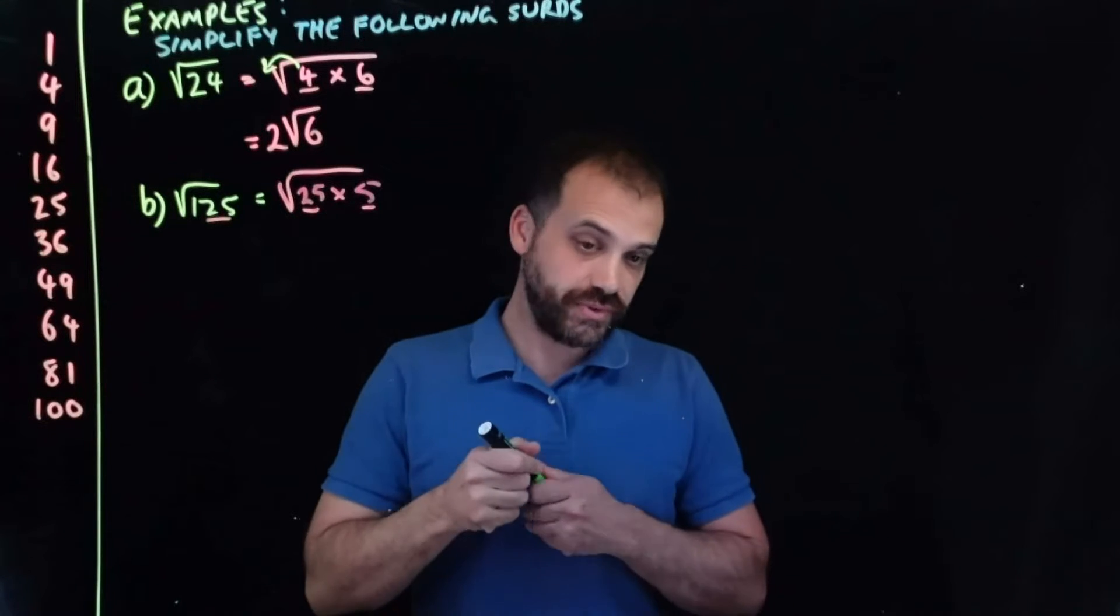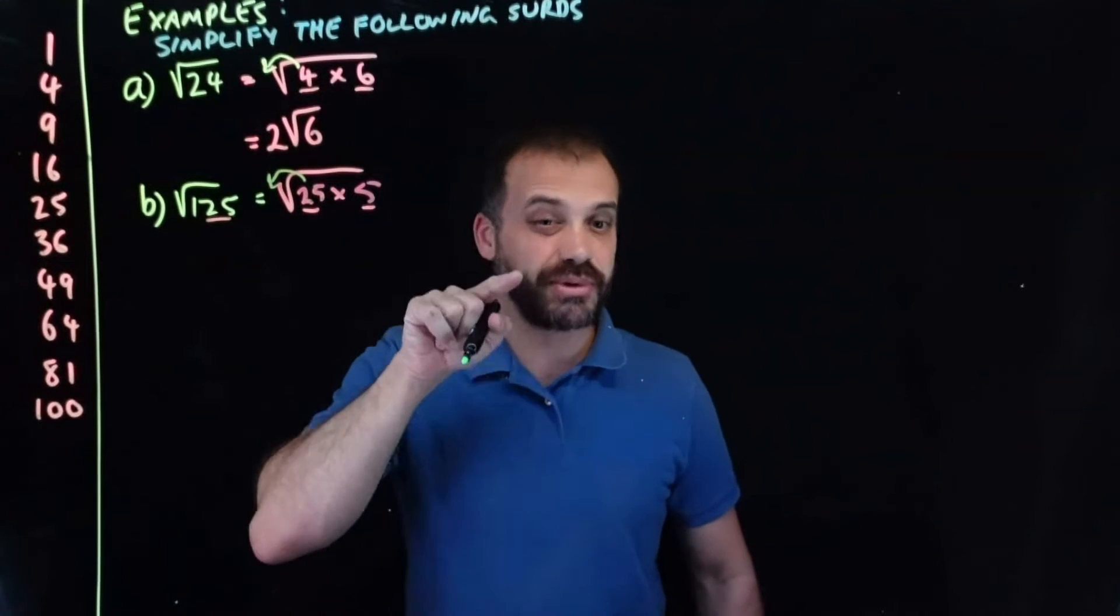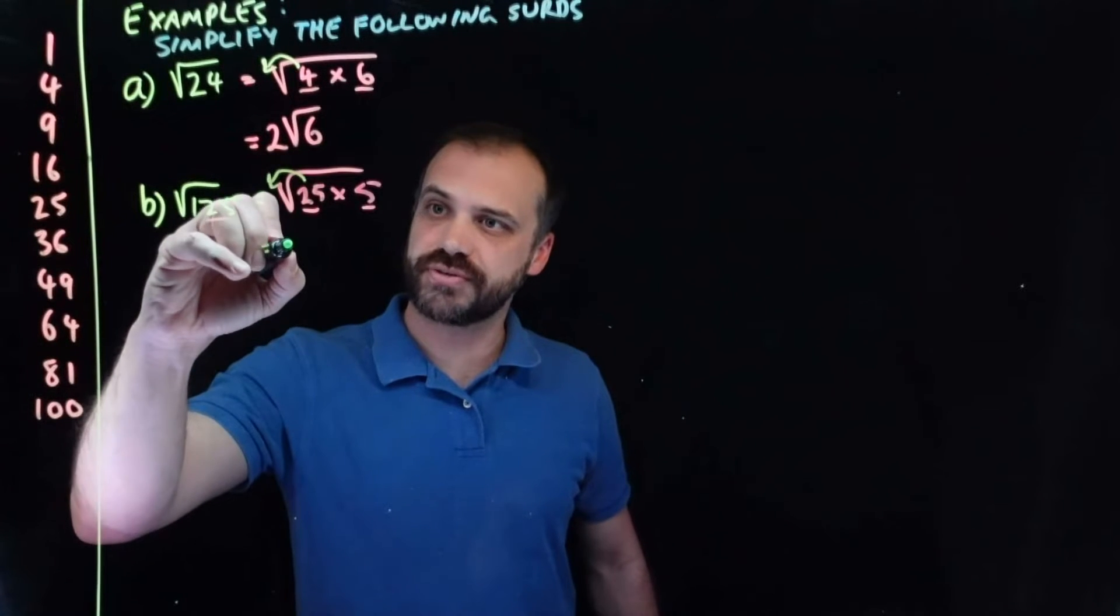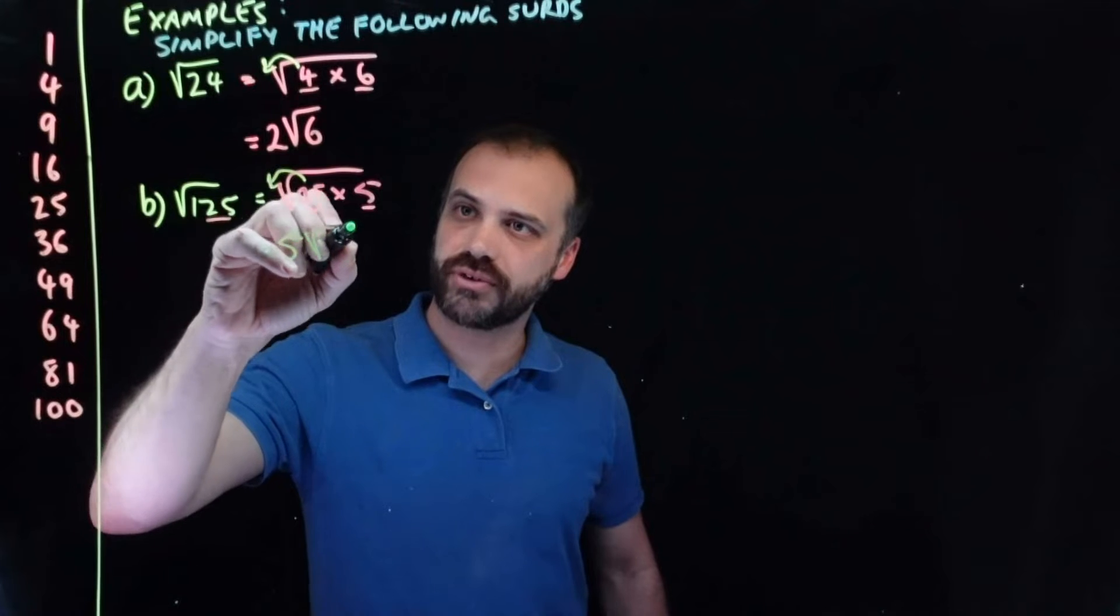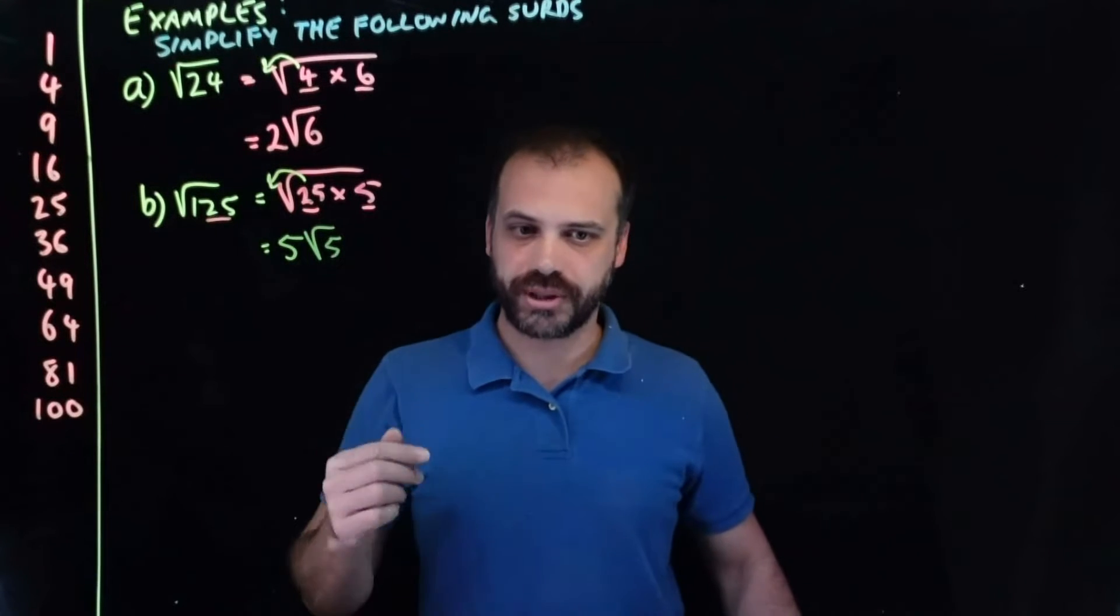And now that we've done that, we bring the 25 out of the square root, and when we do, we need to square root it. So, the square root of 25 is 5, so that's going to be on the outside, and we're left over with a 5. 5 root 5.